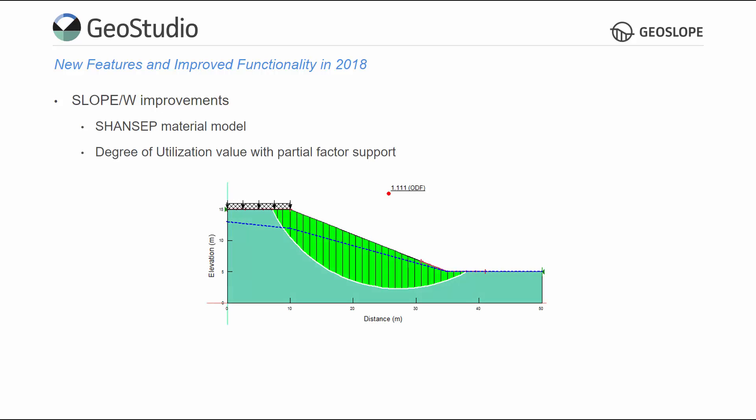For Eurocode or other partial factor analyses, the factor of safety is now the over-design factor, and users may display the degree of utilization.